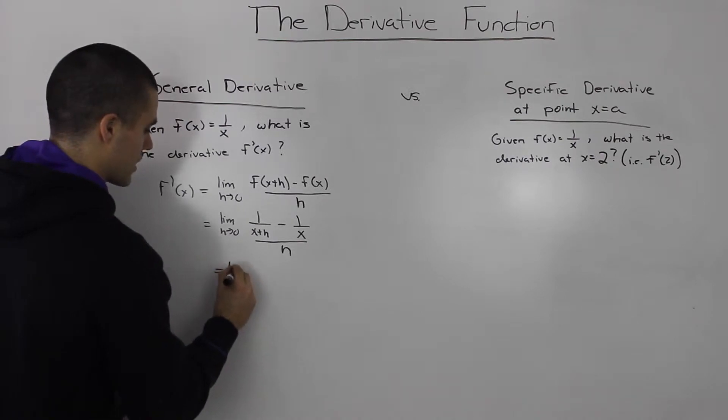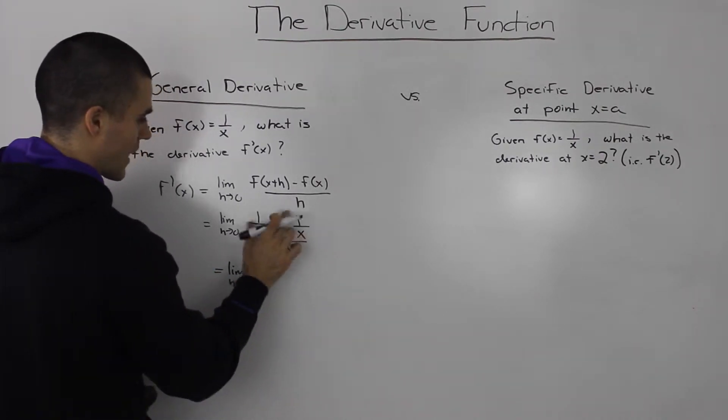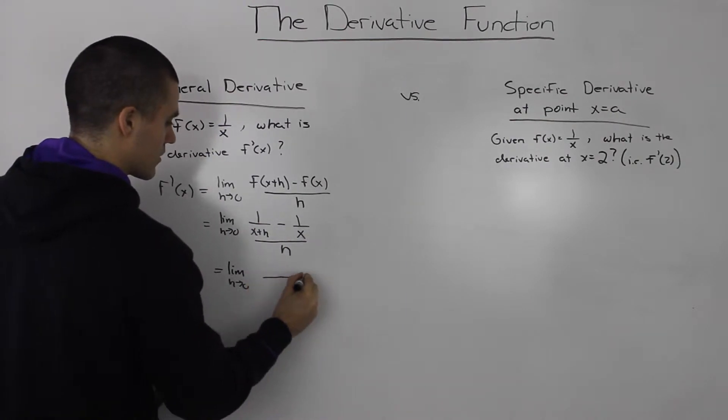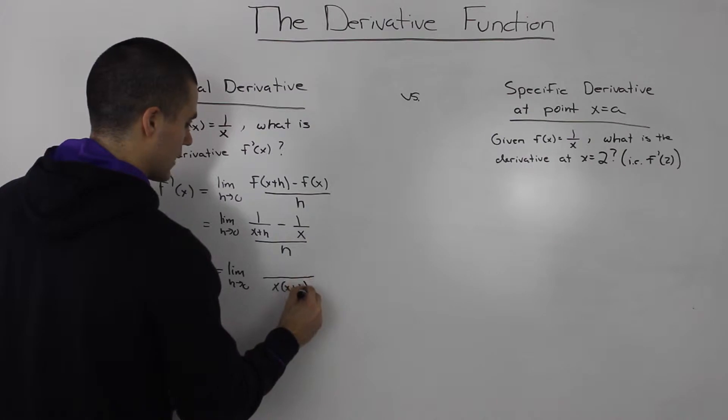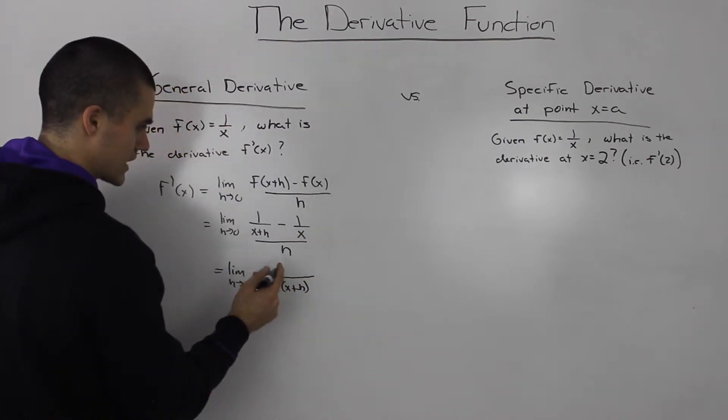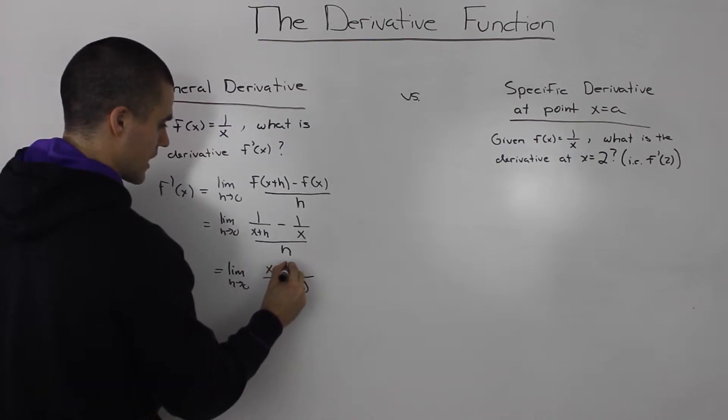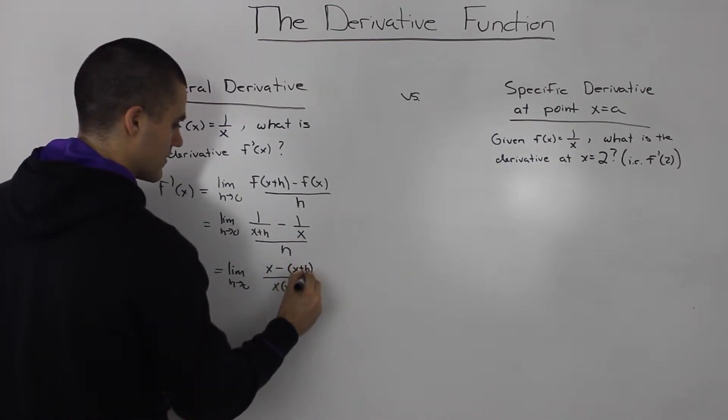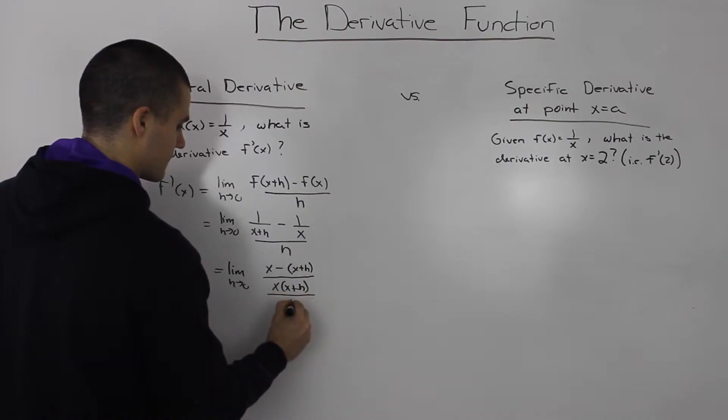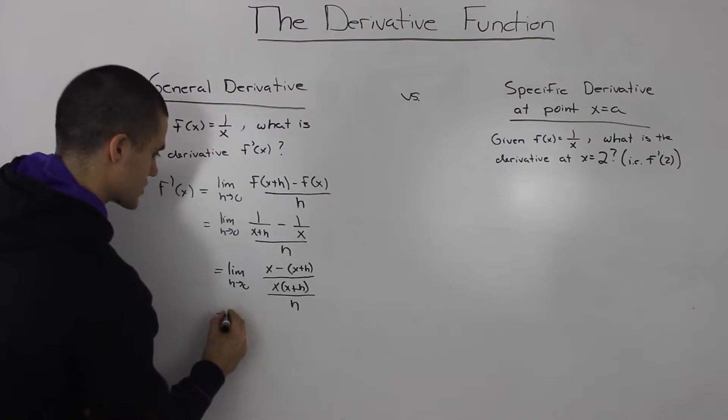Now if we combine these fractions here in the numerator, I'm not going to go into too much detail on how to do this because we've done this so many times. But basically you'll get something like x minus x plus h, all over h.